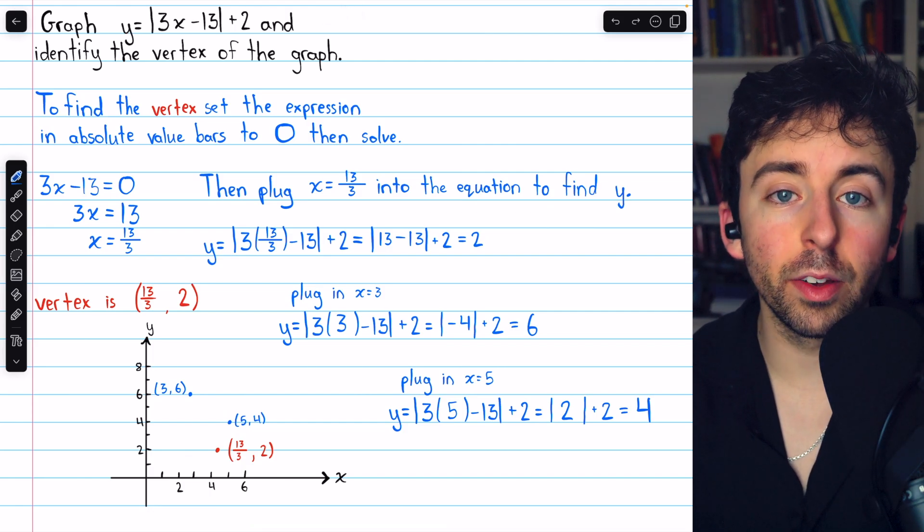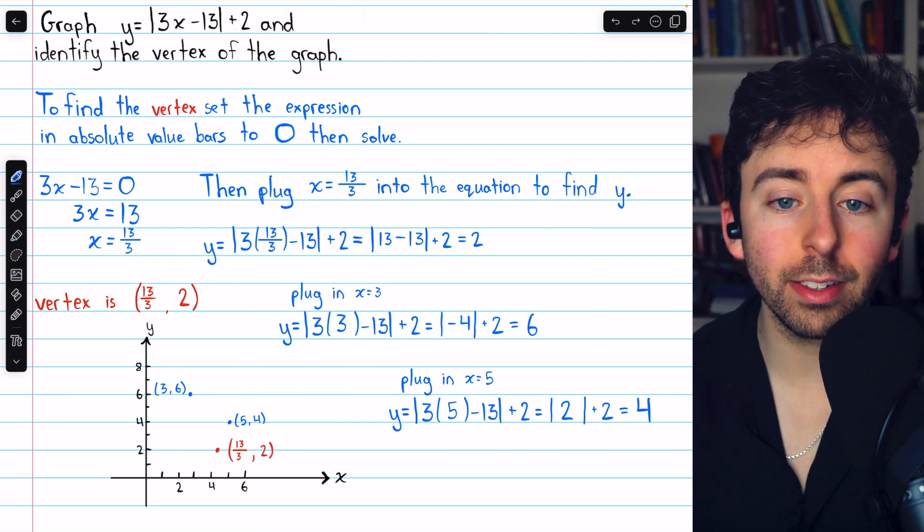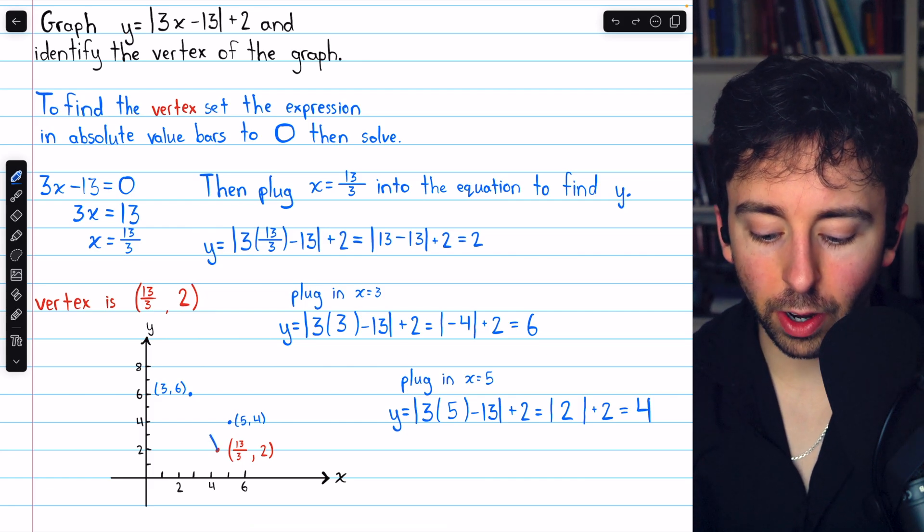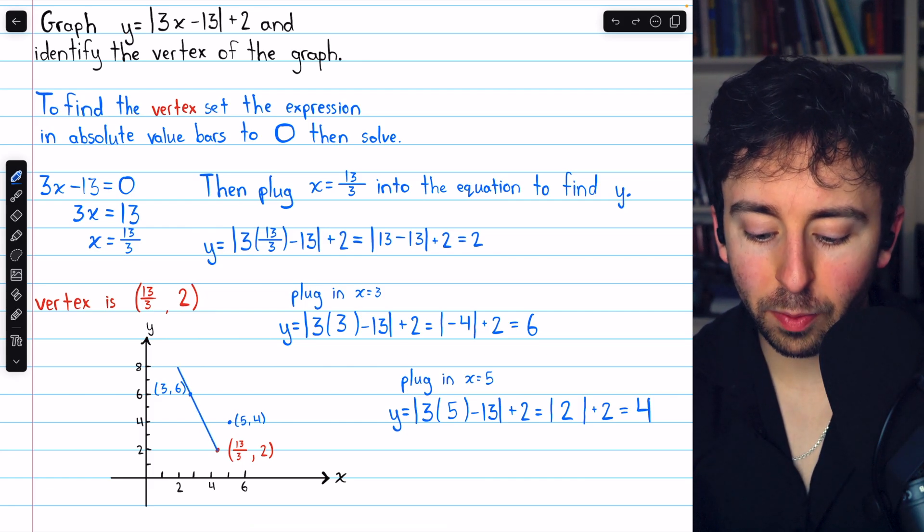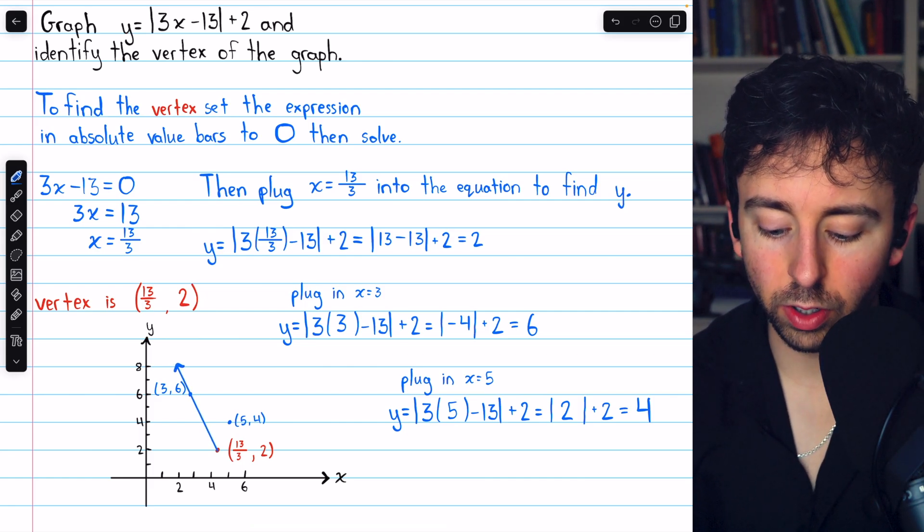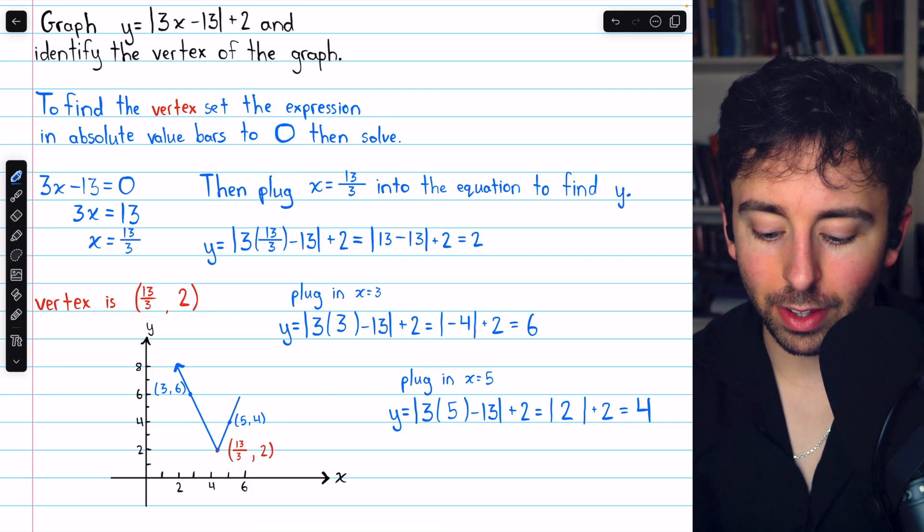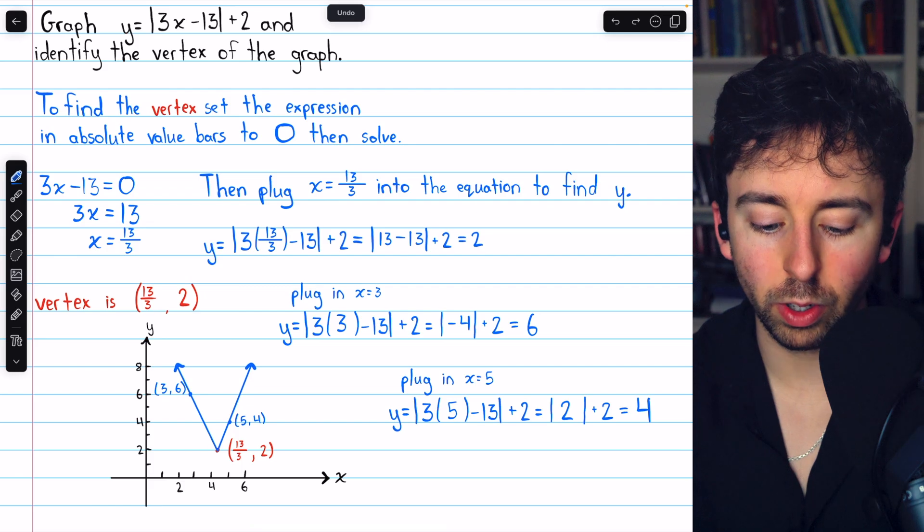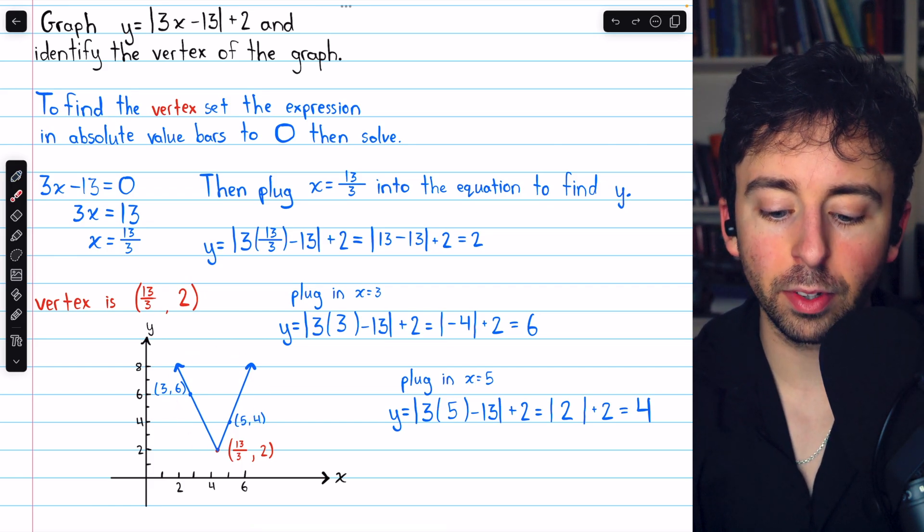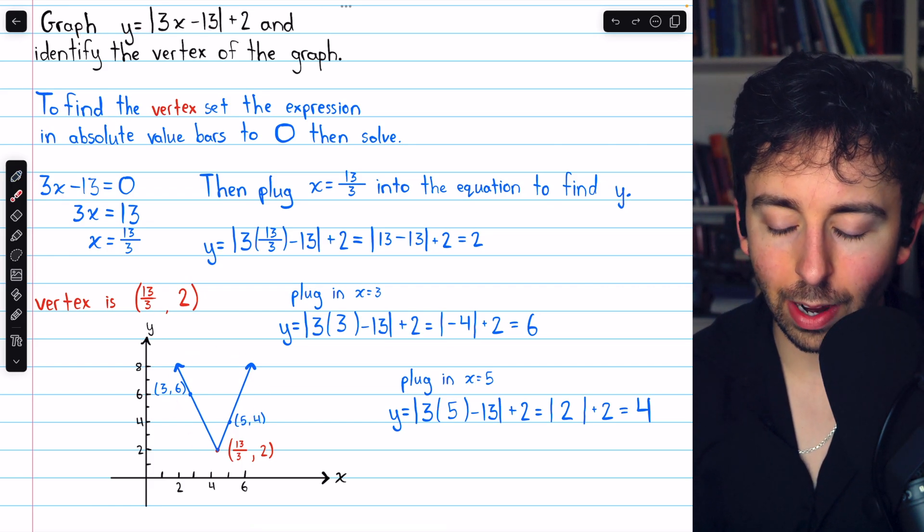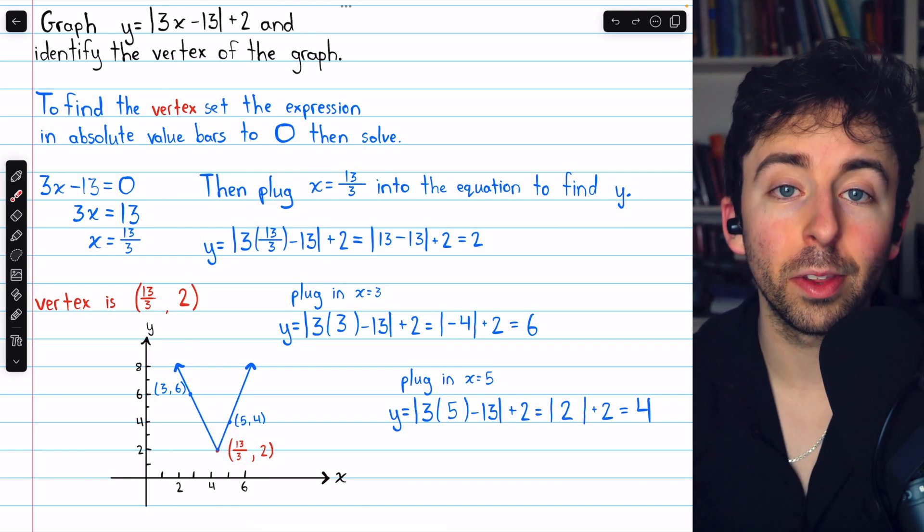Now we just have to connect the vertex to both of these points. And the graph of an absolute value function is linear, except for that part at the vertex where it switches direction. So these segments connecting the points are just lines, but at the vertex you see they switch direction. And that is a graph of this absolute value equation, with of course our vertex in red down there at the bottom.